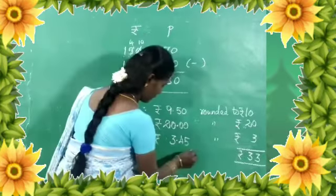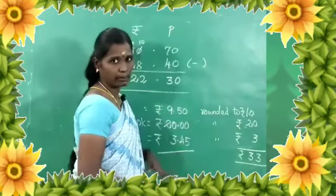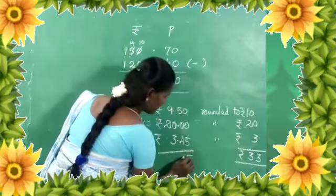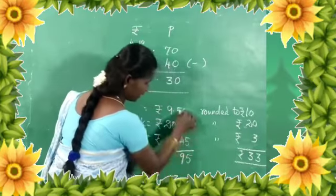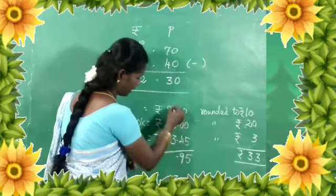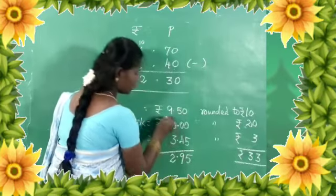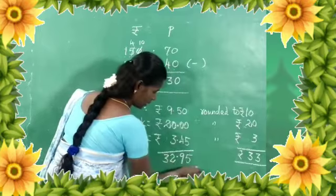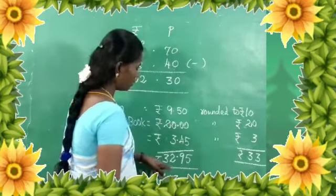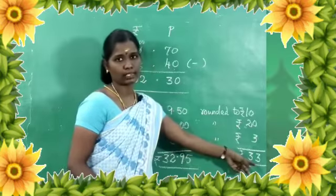The actual value is what we need to add. Adding 9 Rupees 50 Paisa plus 20 Rupees plus 3 Rupees 45 Paisa: 9 plus 3 is 12, carry 1, giving 32 Rupees 95 Paisa. So the actual value is 32 Rupees 95 Paisa and the estimation value is 33 Rupees.